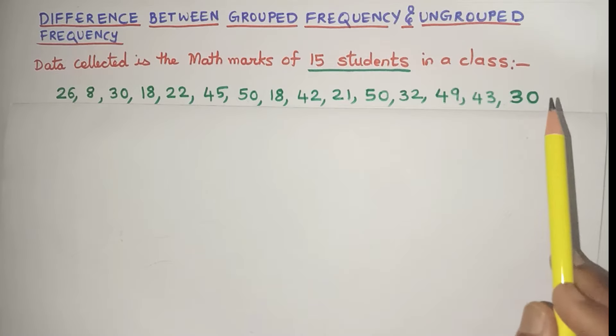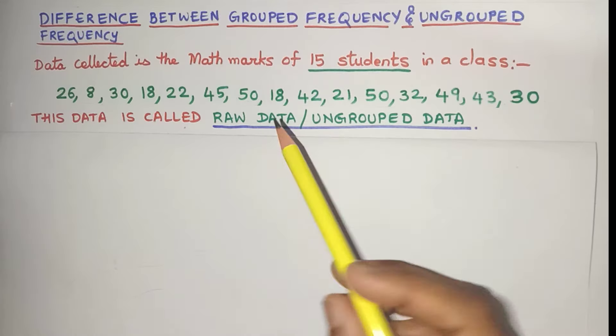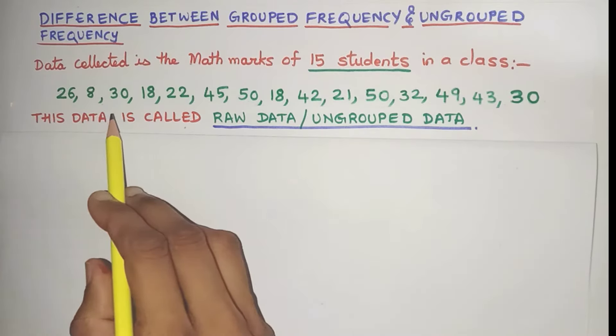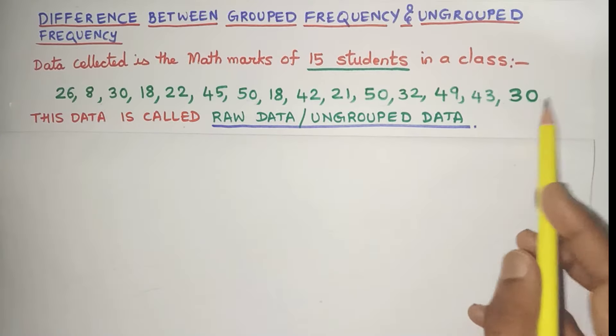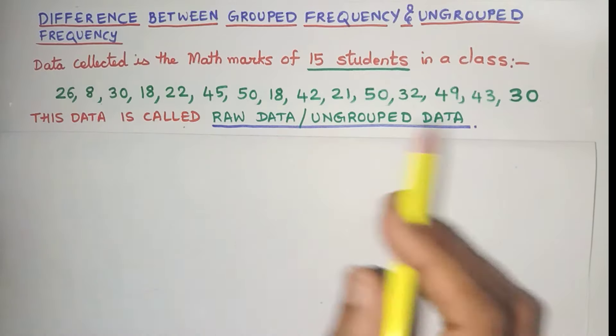Now this initial data that we have collected is known as raw data or ungrouped data. Why is it raw data? That's because it is data in the purest form. We haven't done any processing on this data. It's also known as ungrouped data because we haven't done any grouping. We haven't put them into any groups.